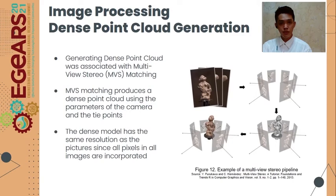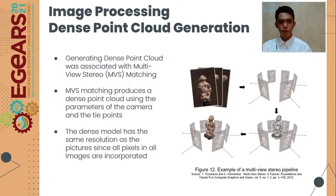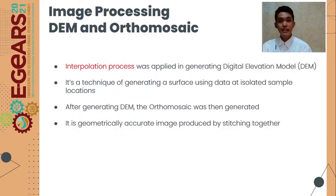For generating the dense point cloud, multi-view stereo matching was applied. The multi-view stereo matching produced a dense point cloud using camera parameters determined through bundle block adjustment and tie points from SIFT. An interpolation process was then applied to generate the Digital Elevation Model (DEM), which is a technique of generating a surface using data at isolated sample locations.